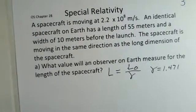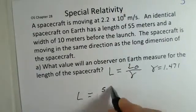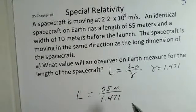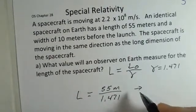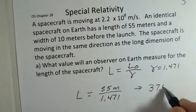So how do we calculate the new length? Well, it's not too complicated. The new length is the length at rest, 55 meters. That's in the direction of motion. Divided by 1.471. The new length of the spacecraft is 37.4 meters.